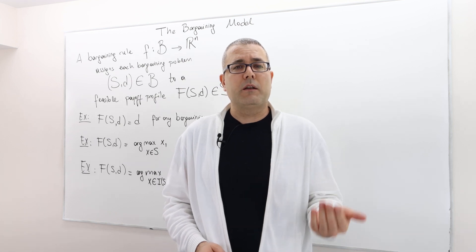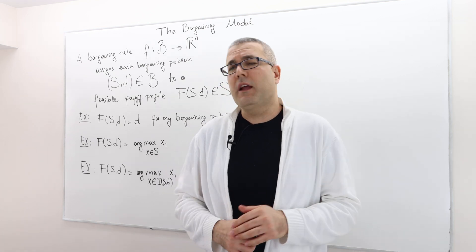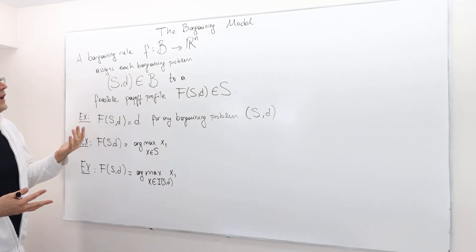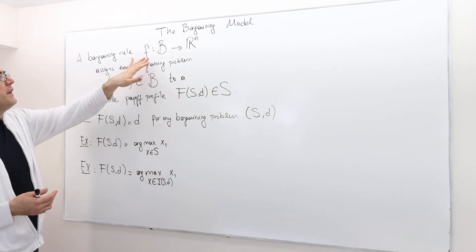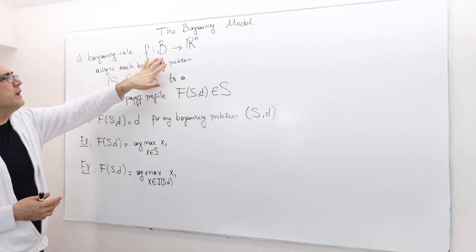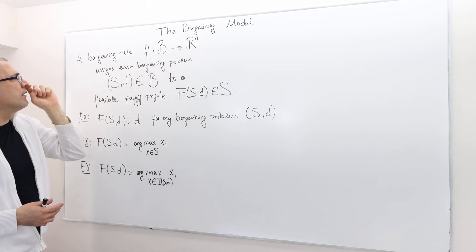In this episode, I'm going to talk about bargaining rules. Mathematically, they are defined as functions which map the set B, kind of a script B, into R^n.